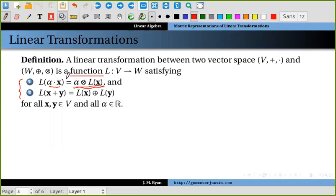These two operations have to be preserved by the transformation, the function itself has to obey this operation. And the same thing has to be true with addition, the vector addition. This addition is happening in V, x plus y is happening in V. In L of x plus L of y, this is the circle plus, this one's happening in W.